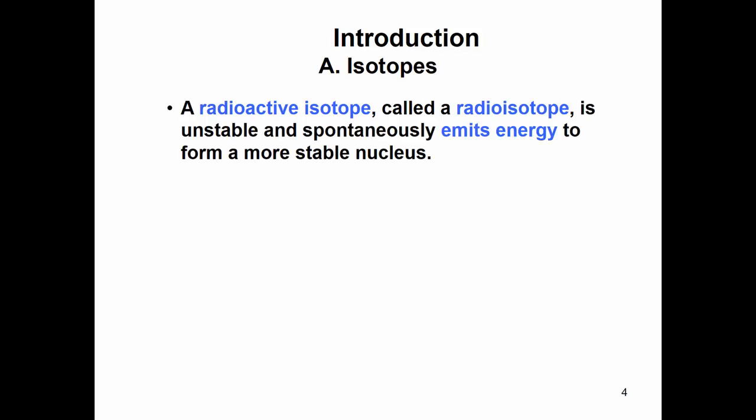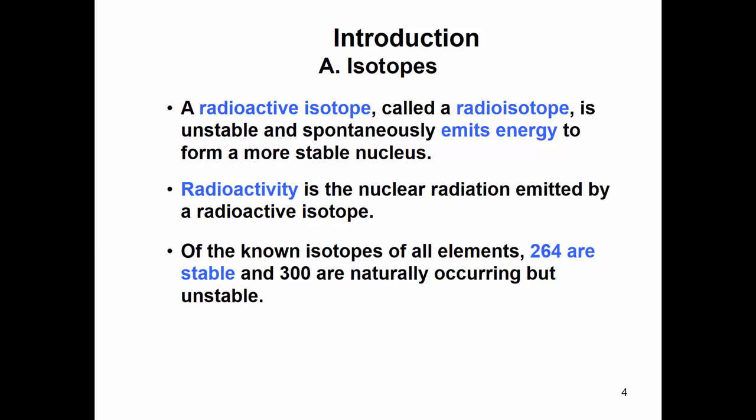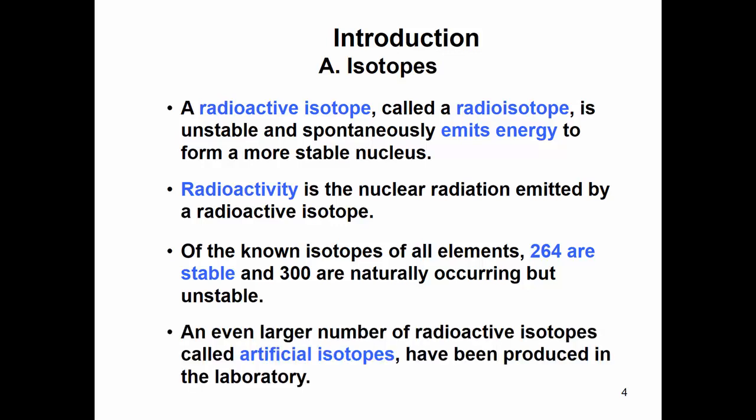What we haven't discussed are radioactive isotopes. Isotopes can be radioactive, meaning that they are unstable and they will spontaneously emit energy to form a more stable nucleus. Radioactivity is the nuclear radiation that's emitted by a radioactive isotope. Of the known isotopes, 264 are stable, so they are not radioactive, and 300 are naturally occurring but unstable. There's an even larger number of radioactive isotopes that can be artificially made in the laboratory as well.